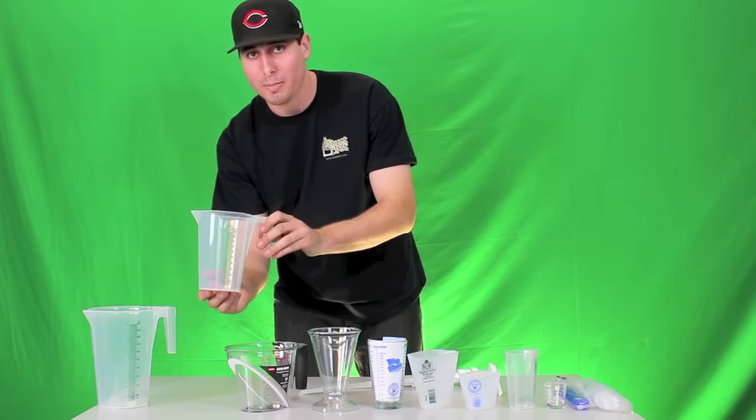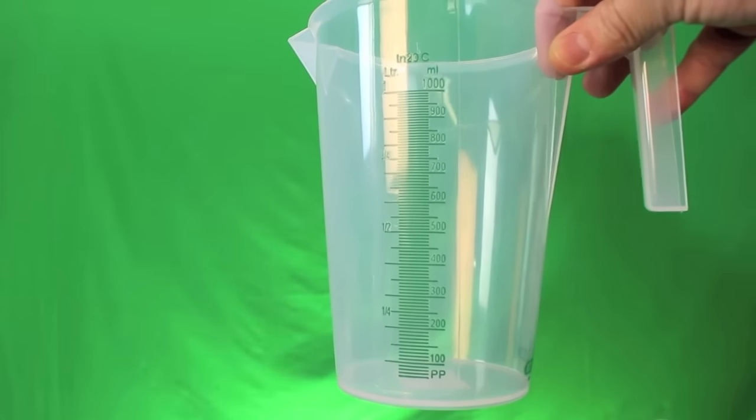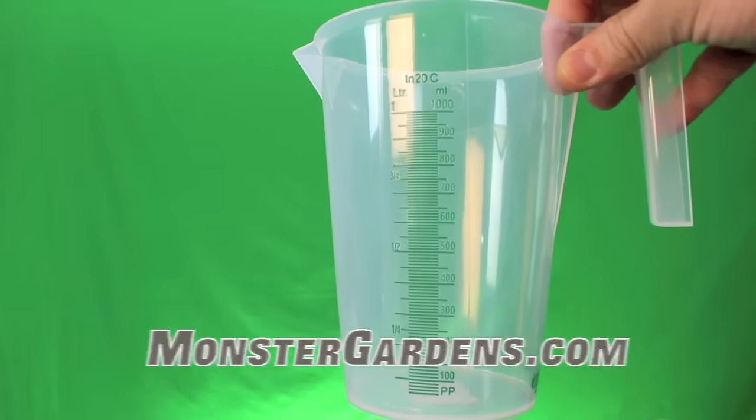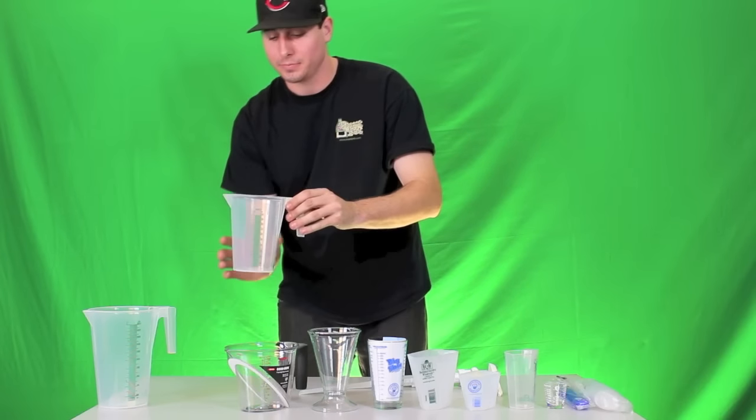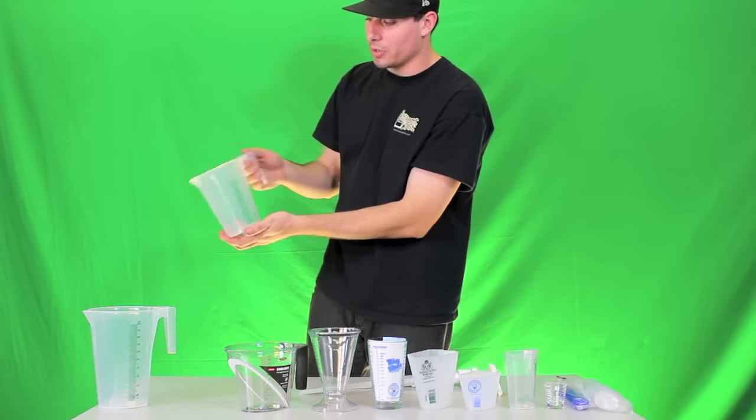Next we have the 1-liter measuring pitcher. This is going to be 1,000 milliliters or 1 liter all the way down to 100 milliliters. You can see here it's the same as the 2,000. It's going to have a nice handle as well as the little spout at the end.